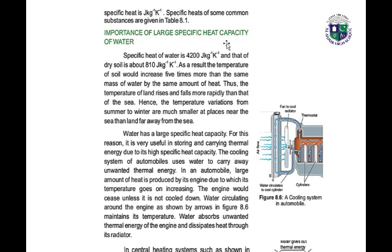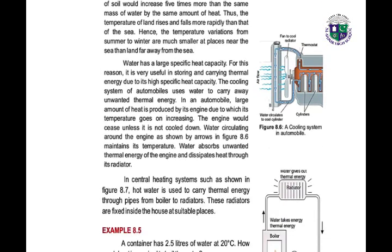The specific heat of water is 4200 J/kg·K and that of dry soil is about 810 J/kg·K. As a result, the temperature of soil will increase five times more than the same mass of water for the same amount of heat. The temperature of land rises and falls more rapidly than that of the sea. Hence, temperature variations from summer to winter are much smaller at places near the sea than land far from the sea. Water's high specific heat capacity makes it very useful in storing and carrying thermal energy, and is used in the cooling systems of automobiles.